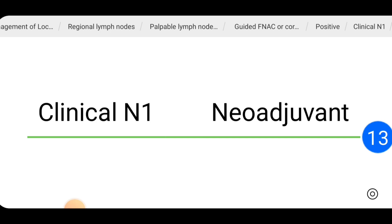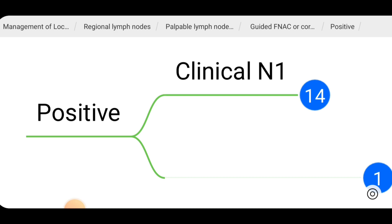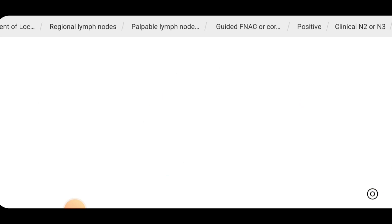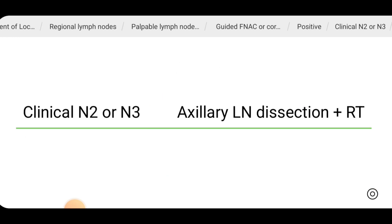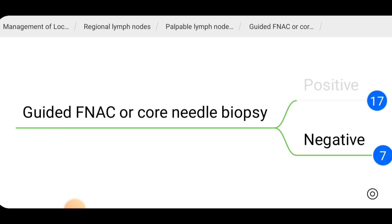That is how we manage a patient who had clinically palpable lymph nodes with fewer than 3 nodes involved — we gave neoadjuvant therapy and did further management accordingly. If the patient has palpable lymph nodes, biopsy comes positive, and the patient has N2 or N3 disease, then we should do axillary lymph node dissection plus radiotherapy for these patients.